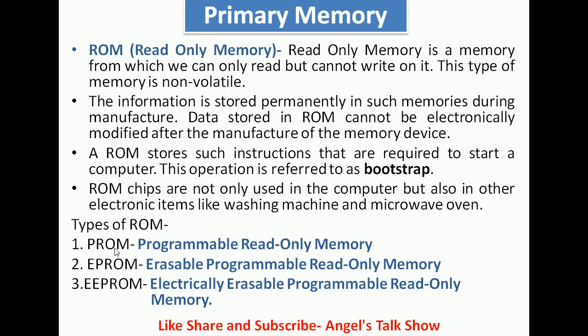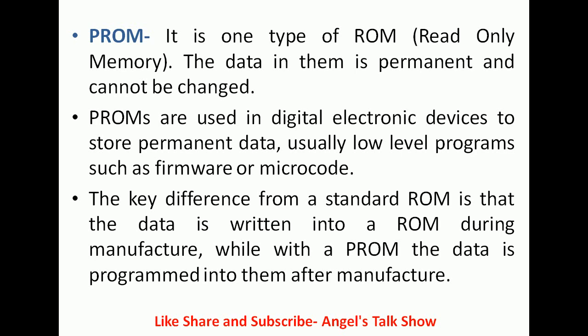There are three types of ROM: PROM, EPROM, and EEPROM. PROM stands for Programmable Read Only Memory, EPROM stands for Erasable Programmable Read Only Memory, and EEPROM stands for Electrically Erasable Programmable Read Only Memory. PROM is one type of ROM where the data is permanent and cannot be changed. PROMs are used in digital electronic devices to store permanent data, usually low-level programs such as firmware or microcode. The key difference from standard ROM is that data is written into ROM during manufacture, while with PROM the data is programmed after manufacture.